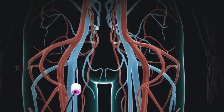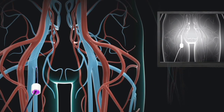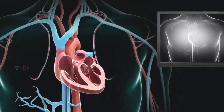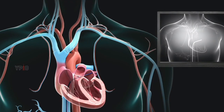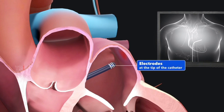Next, a catheter is inserted through the incision into one of the blood vessels in the area. Your physician may inject a contrast medium, or dye, through the catheter so that the blood vessels are clearly visible on x-ray images. Under live x-ray guidance, your physician carefully passes the catheter through the vessel up into your heart. Often, more than one catheter is required. Electrodes at the tip of the catheter are utilized to convey electrical signals and document your heart's electrical activity.